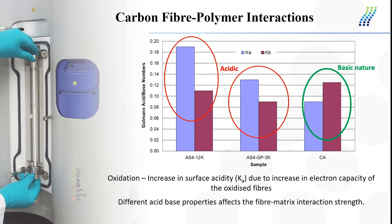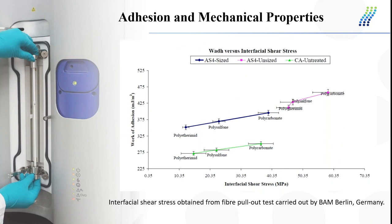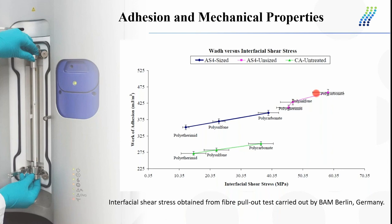Different acid-base properties affect the fiber-matrix interaction strength, which was supported by the adhesion and interfacial shear results. The oxidized carbon fiber with all three polymers has higher adhesion and interfacial shear stress values — both adhesion and interfacial shear stress increased. However, sizing did not really increase the mechanical performance despite the higher passive energy intensity.